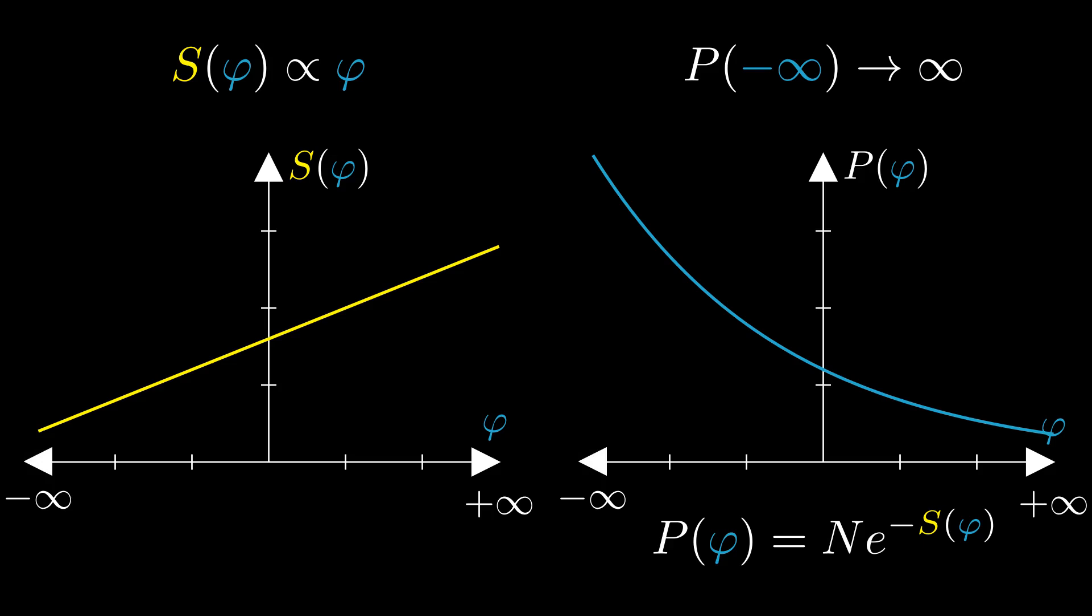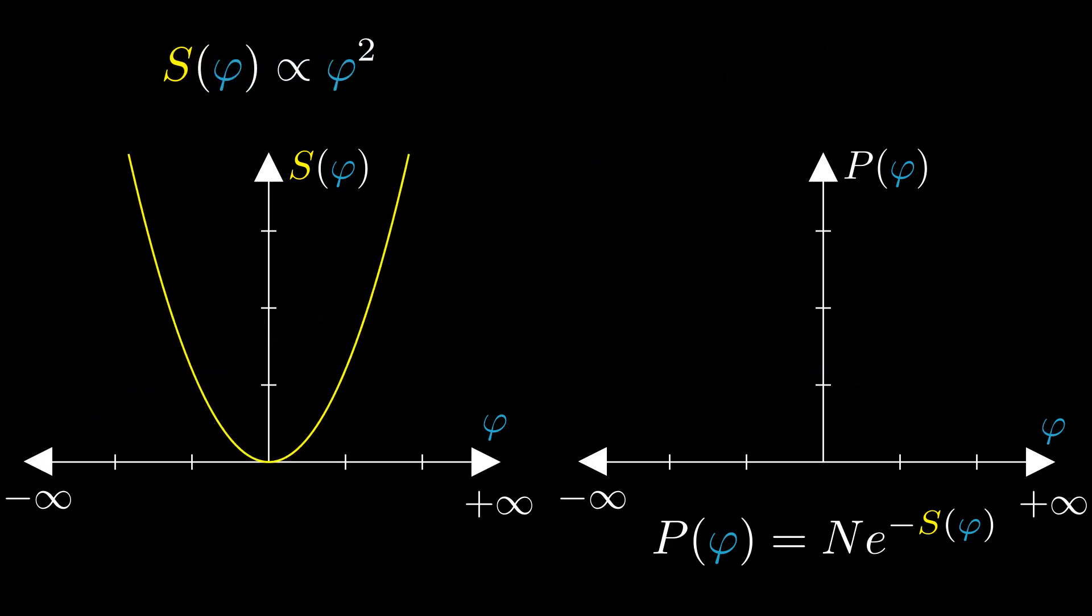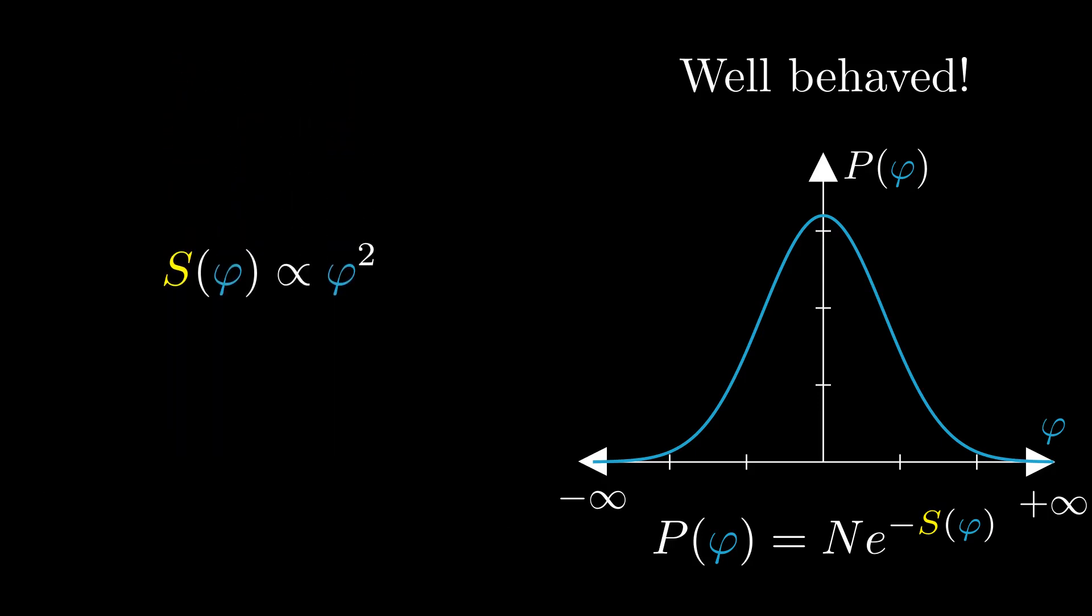The first useful function we get is when the action is quadratic in phi. We call this the free action, for reasons that will become clearer later on. We can now start adding higher terms in phi, but for simplicity, let us stick with this free action.